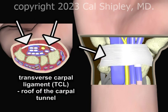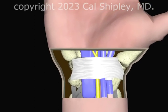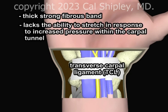Providing the roof over the carpal tunnel is the transverse carpal ligament. The transverse carpal ligament is a thick, strong, fibrous band formed from interwoven bundles of fibrous connective tissues. As a result of its structure, it lacks the ability to stretch when the pressure within the carpal tunnel increases. This lack of stretchiness is a major contributing factor in the onset of carpal tunnel syndrome.